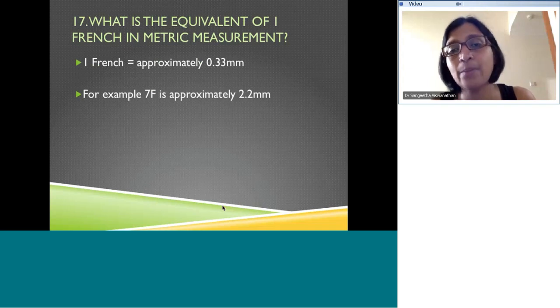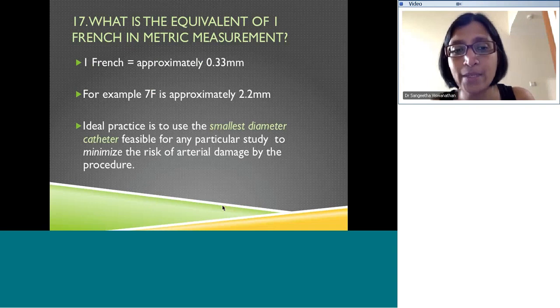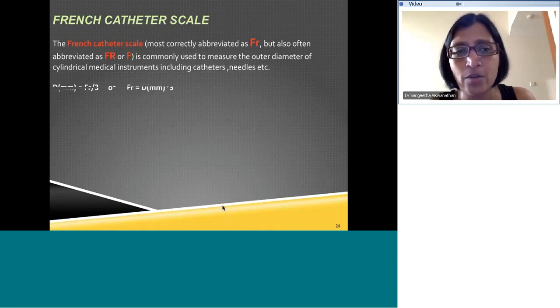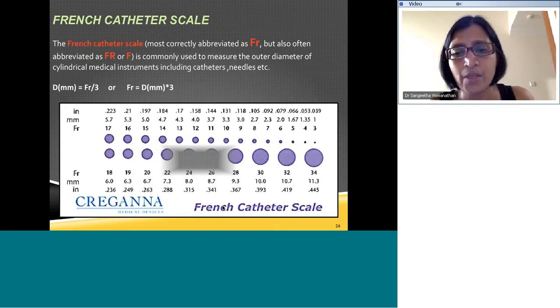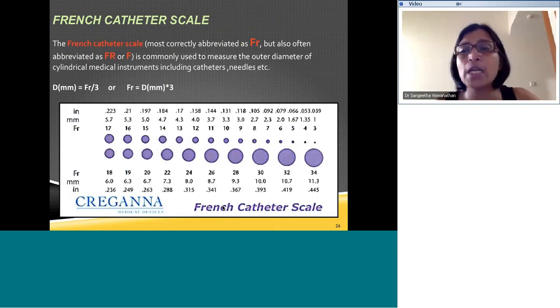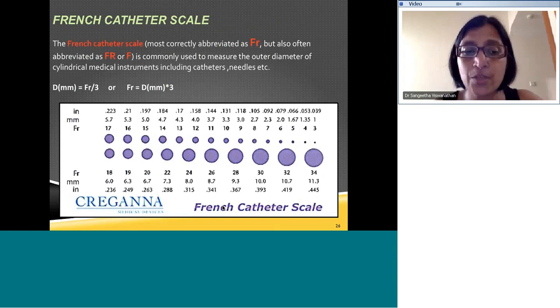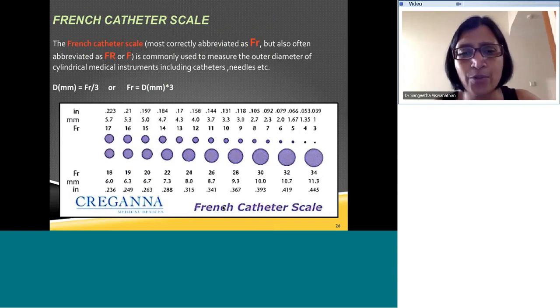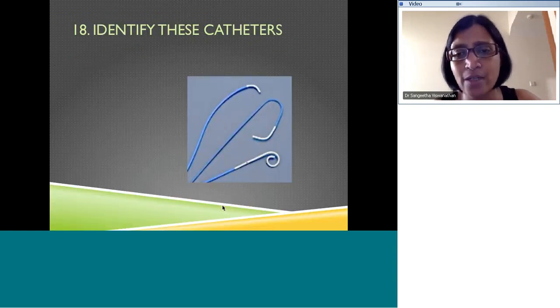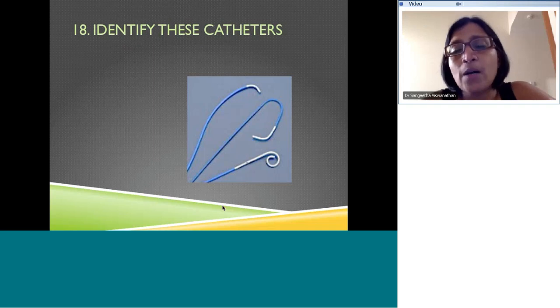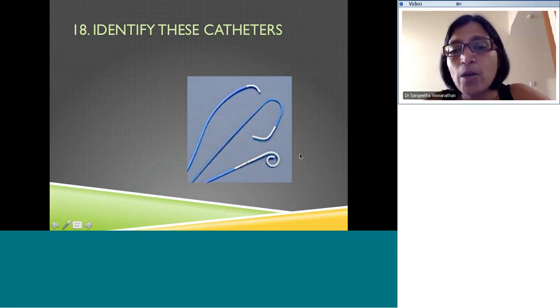A very commonly used set of catheters is the Judkins right, Judkins left, and pigtail. This is the standard set of catheters used by the adult cardiologist when doing coronary angiography.